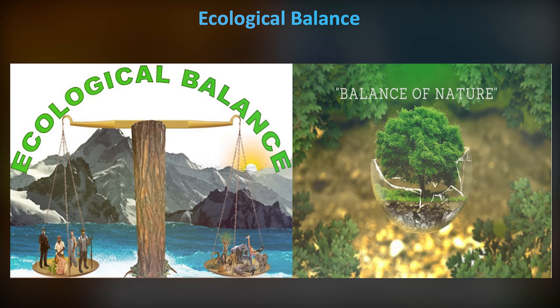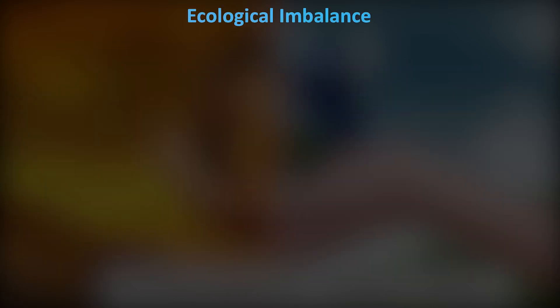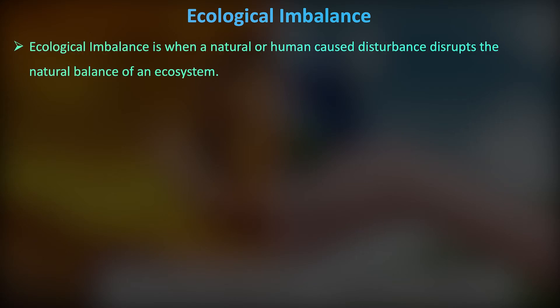Ecological Imbalance is the state in which natural or human interruption is introduced. There are different types of disturbances - there are human interruptions and there are natural interruptions.